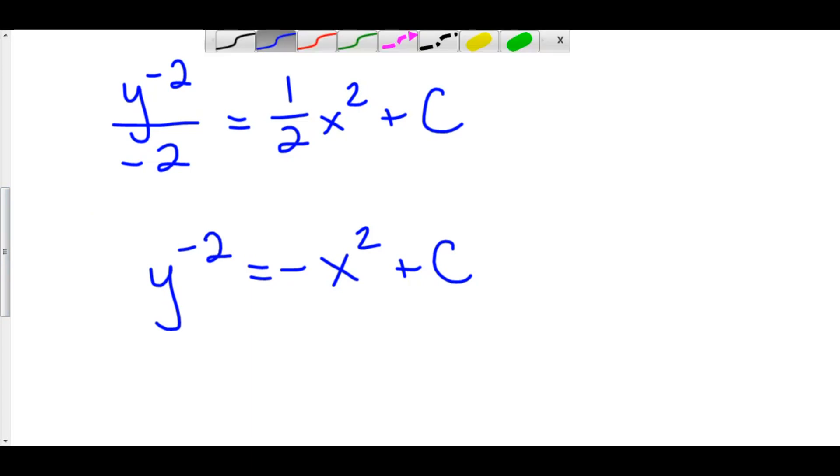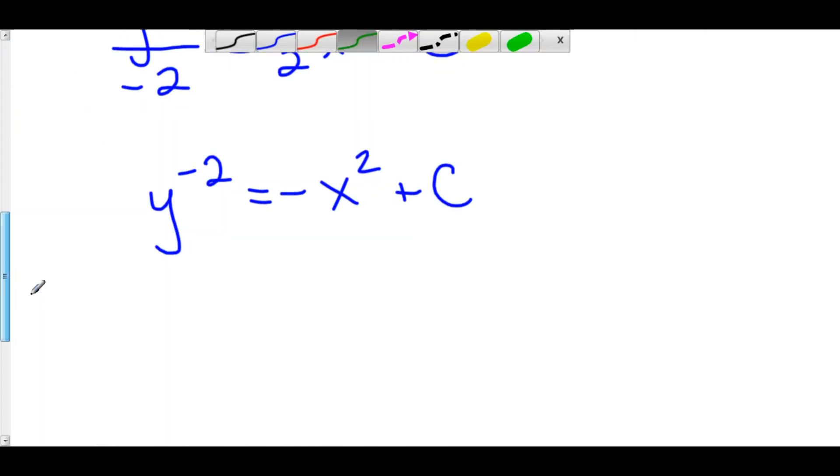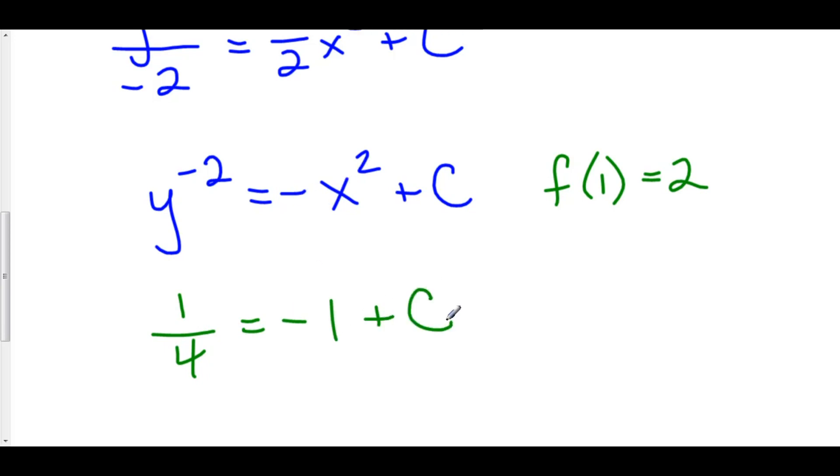At this point we can plug in our initial condition which was given by 1 comma 2. So when x equals 1 our function value is equal to 2. So let's plug in 2 into y. 2 to the negative 2 is 1 over 4 and this is equal to negative 1 squared is negative 1 plus c.